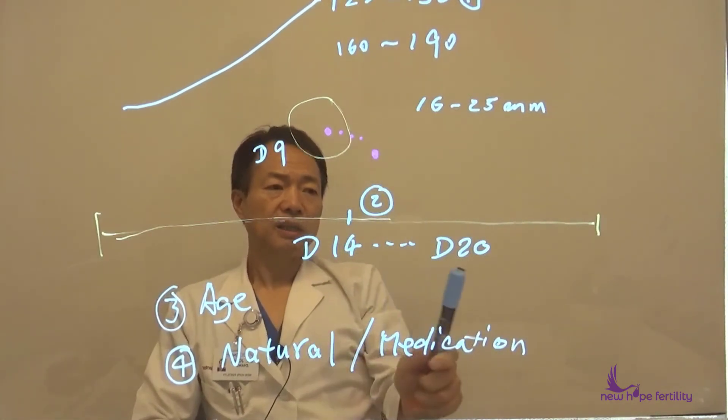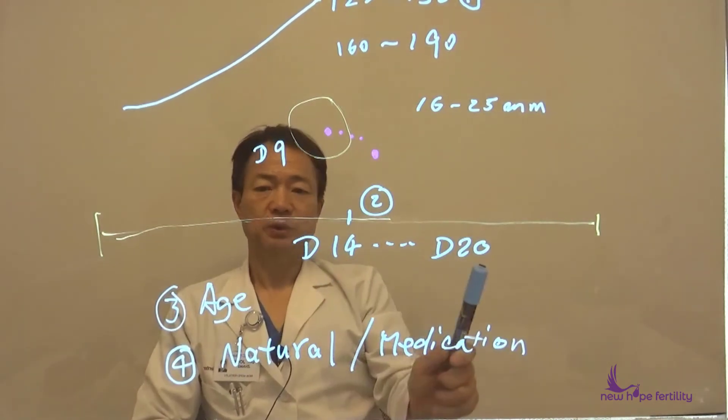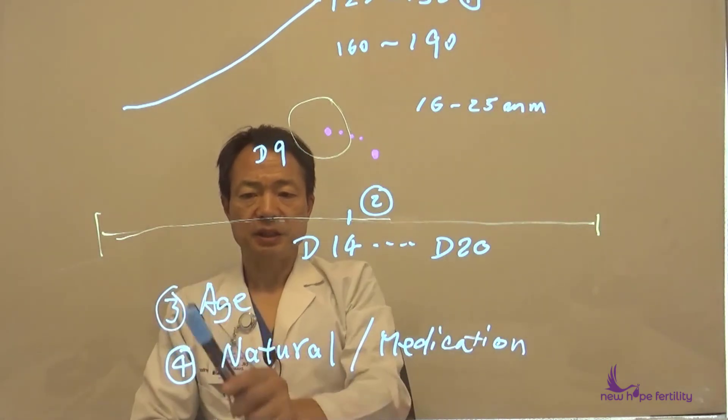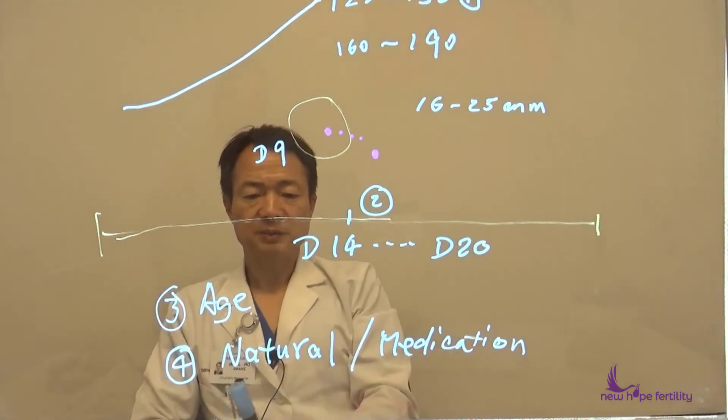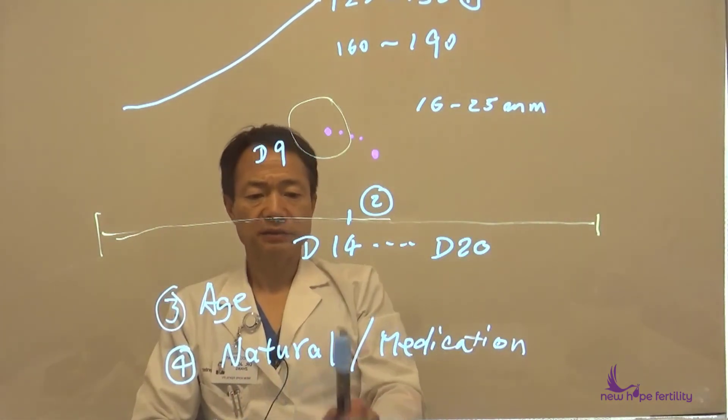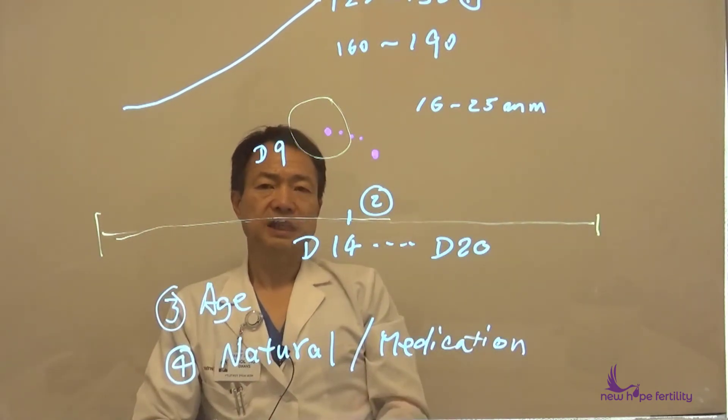Number three: how long has the follicle been growing? Is it day 1, day 9, day 14, or day 20? Then the age: older patients tend to have smaller follicles at ovulation. And last but not least, natural cycles tend to be earlier with smaller follicles, while taking medication means the size will be a little bit longer and on the larger side.